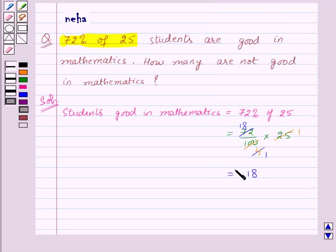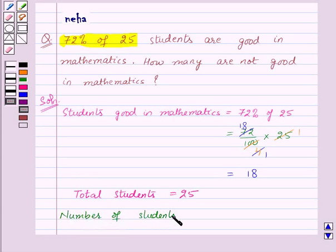So this means that 18 students are good in mathematics. Now we have total students equal to 25. This implies the number of students not good in mathematics.